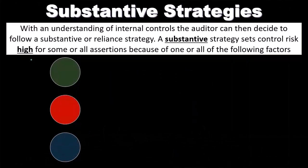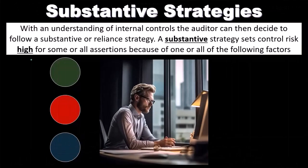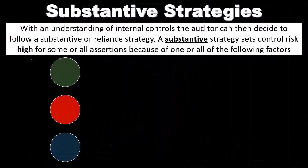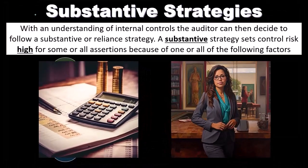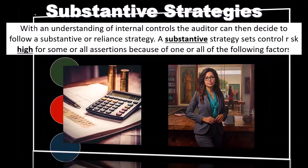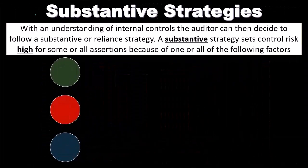Control risk being high means that we think the internal controls are weak for whatever reason, and therefore we can't rely on them. So we're going to skip more testing of the internal controls and go straight to the more difficult, longer substantive testing — actually going out to the client, picking up those files, asking for bills and invoices, then tracing, testing, and tracking those back.